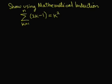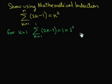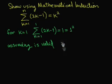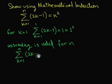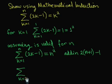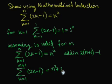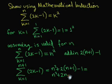Let us apply the principle of mathematical induction to demonstrate that summation from k equal 1 to n of 2k minus 1 equals n squared. The formula is valid for n equal 1, since the sum equals 1, which equals 1 squared. Now, we assume the formula is valid for some arbitrary natural number n. By adding 2 times (n plus 1) minus 1 on both sides, we get the summation from k equal 1 to n plus 1 of 2k minus 1 equals n squared plus 2n plus 1, which equals (n plus 1) squared.